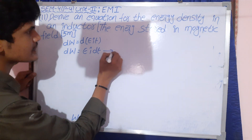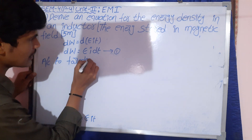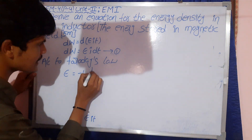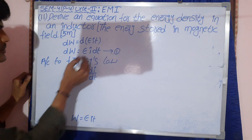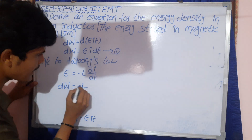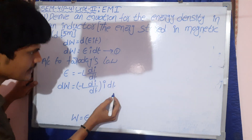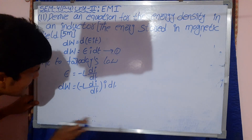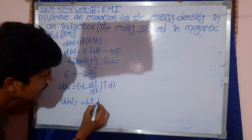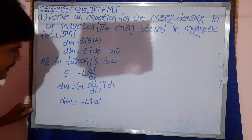This is equation number one. According to Faraday's law, ε = -L(di/dt). Substituting this into the above equation: dW = -L(di/dt)·i·dt. The dt terms cancel, giving dW = -L·i·di.